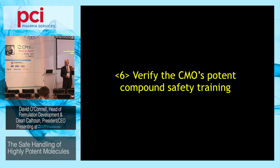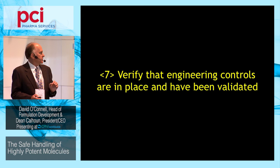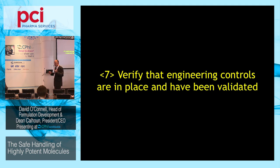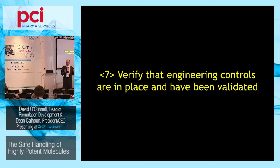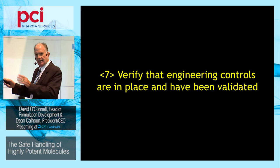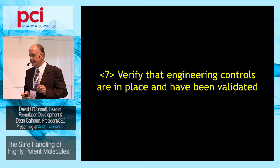Verify that engineering controls are in place and have been validated. You'll want to see the surrogate monitoring results. If it's a credible potent compound safety CMO, you'll want to see that they've done surrogate monitoring with compounds like lactose or naproxen sodium. Look at the data and how many iterations they have — it's easy to have good numbers if you only did one iteration, but having repeatable studies with close airborne exposure results is very important. If they change the process, they may have to repeat or do additional surrogate monitoring.